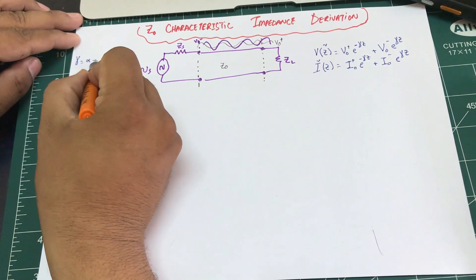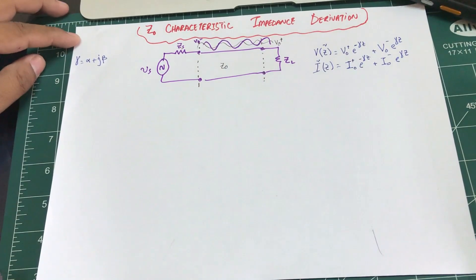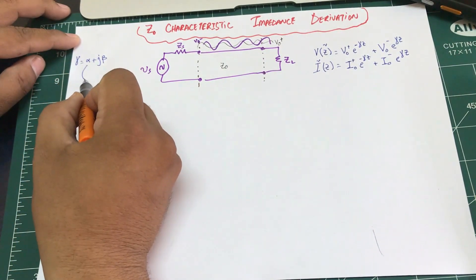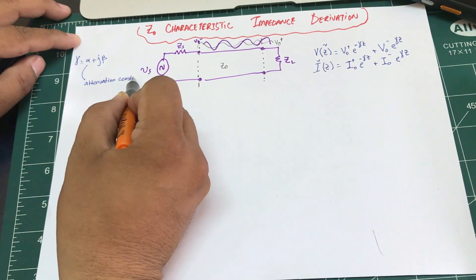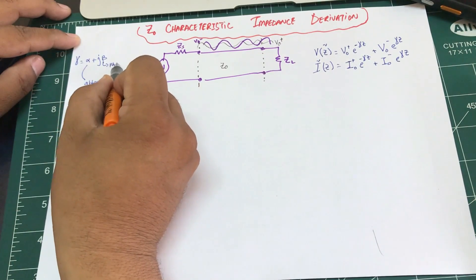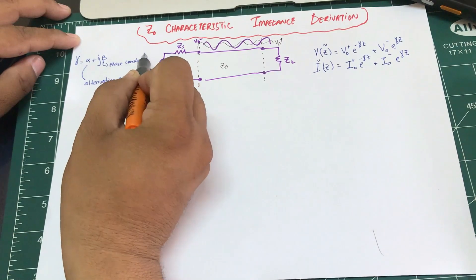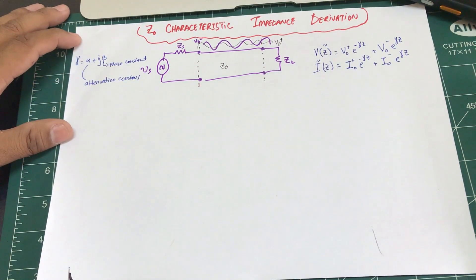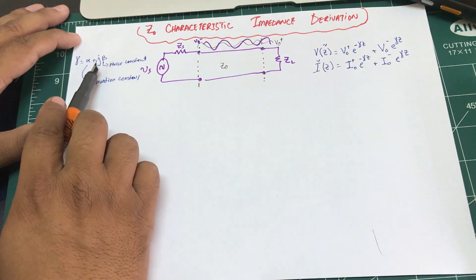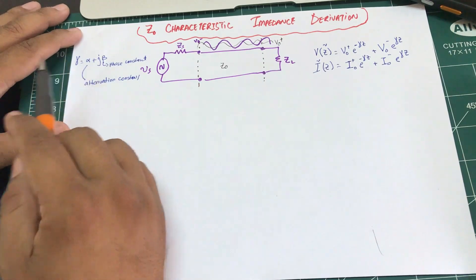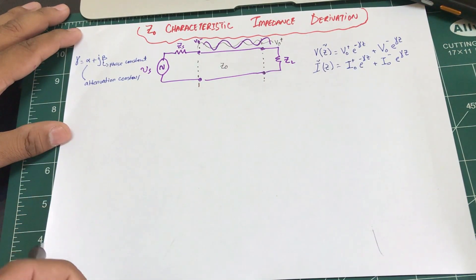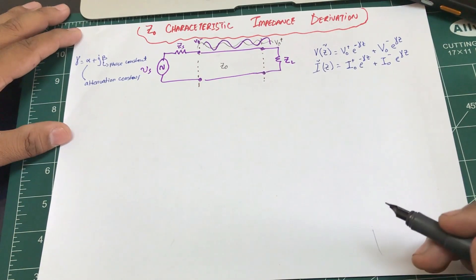What is gamma? Gamma has the form α + jβ and is known as the complex propagation constant. It consists of an attenuation constant α and a phase constant β. If you look at the telegrapher's equation, the imaginary parts are actually L and C — these are not physically present in the transmission line, but their behavior is there; this is how the transmission line operates.